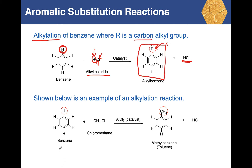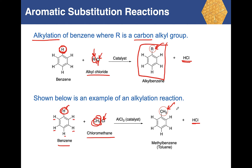A specific example: benzene reacts with chloromethane. This is the R group, CH3. A hydrogen on the benzene ring is substituted by the CH3 group. The hydrogen combines with the chlorine to give HCl as the inorganic product, and the methylbenzene is our organic product.